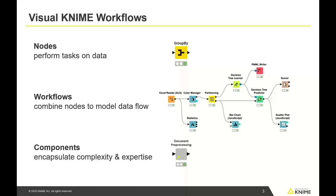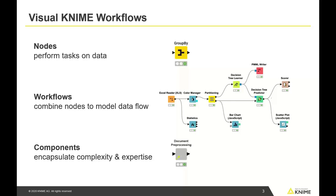If you have sub-workflows you want to share with colleagues — similar to a macro — you can use components, which expose only certain features of the sub-workflow, like partitioning settings or which column to use for the decision tree learner, while hiding internal details. These components can be shared via the KNIME Server as building blocks to make it easier to build complex workflows.